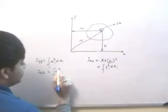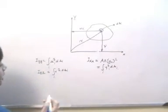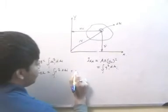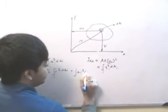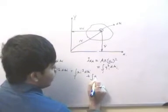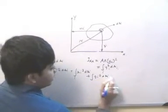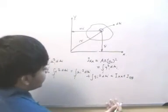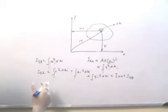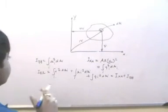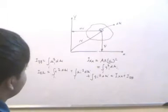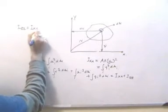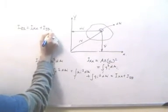As we can see, r squared is nothing but xi squared plus yi squared. So Izz equals the integration of xi squared times dai plus the integration of yi squared times dai, which is essentially Ixx plus Iyy. This states that the moment of inertia about the z-axis equals the sum of the moments of inertia about the x-axis and the y-axis — this is the perpendicular axis theorem.